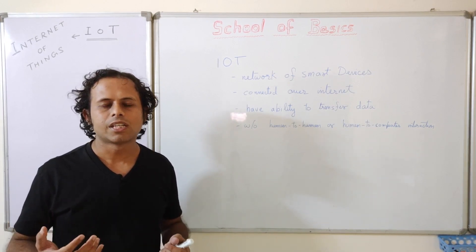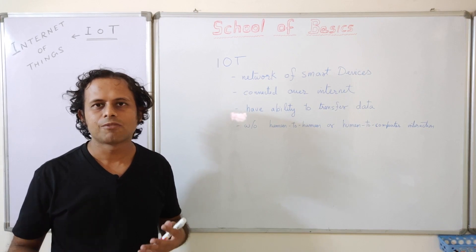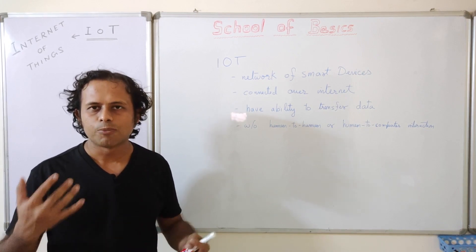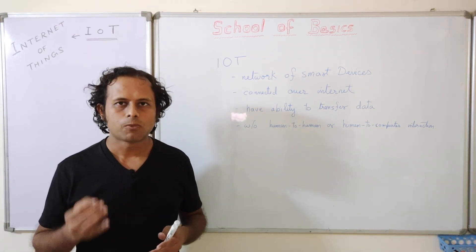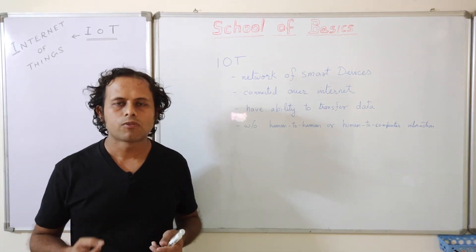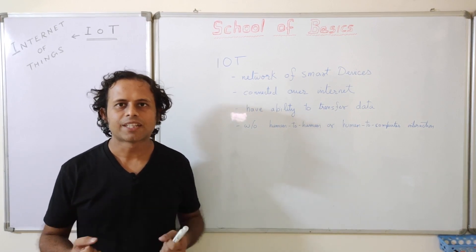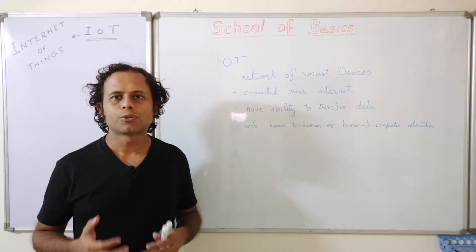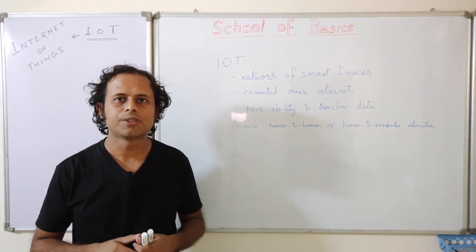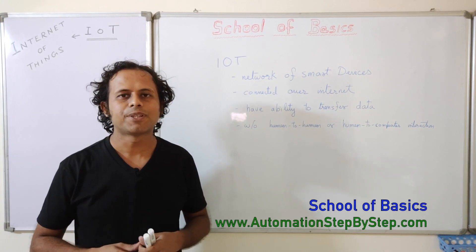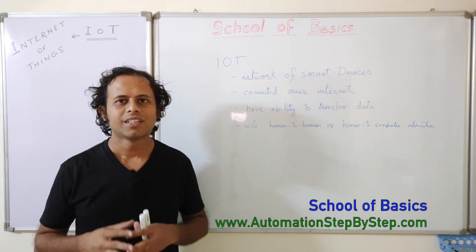So Internet of Things is the concept of smart devices available over the internet that can talk to each other, communicate, and transfer data without any human interaction. That was the very basics of IoT. If you understand better with stories, I've written a story on what Internet of Things is — I'll have the link in the description. I'll meet you in the next episode of School of Basics with a new topic. Thank you for watching.